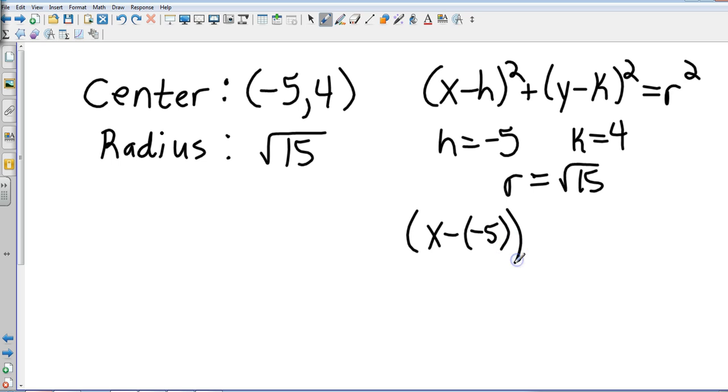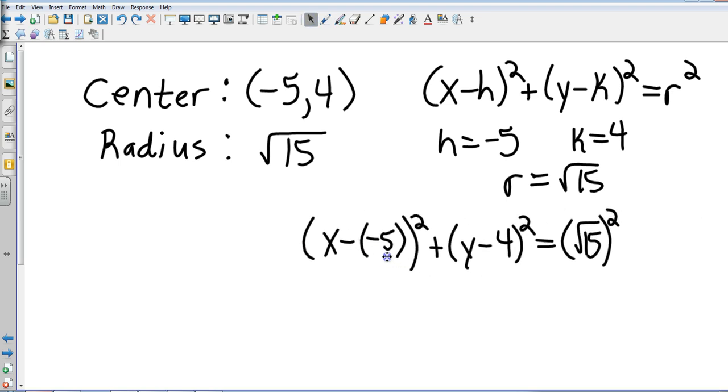Now let's plug it in. I'm going to have x minus h and y minus k, and then I'm going to take the square root of 15 and square it. Minus a minus, that's going to be a plus, so that's going to be x plus 5 squared plus y minus 4 squared equals, now what is the square root of 15 squared? Hopefully you are saying to yourself that is 15.